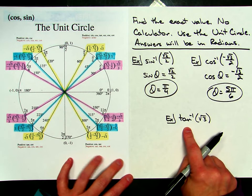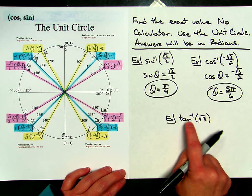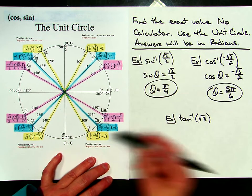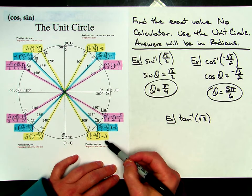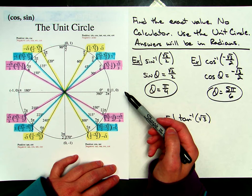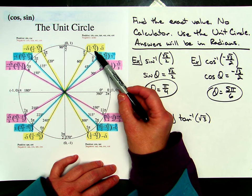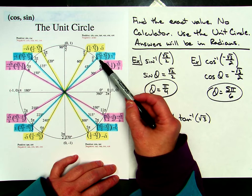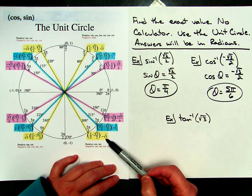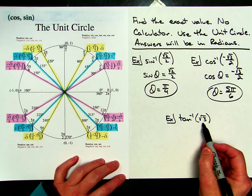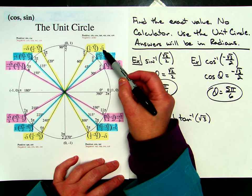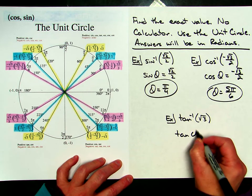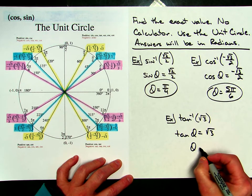My last example is the inverse tangent of the square root of 3. Tangent has the exact same restrictions as sine, so I'm back to looking just in the first and fourth quadrants. I put the tangent values on my unit circle — if you haven't done that, it might be worth doing. Tangent is just sine divided by cosine, so you take y divided by x. Positive square root of 3 is right here at pi over 3. So the tangent of some theta equals the square root of 3, and it turns out that theta is pi over 3.